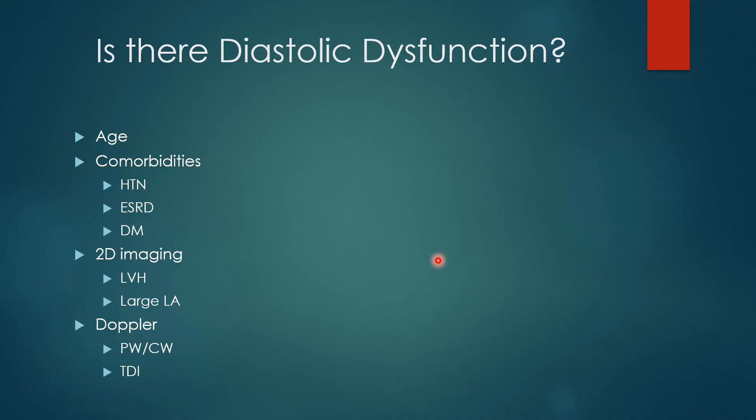Let's go back to the question: is there diastolic dysfunction? When I'm thinking about diagnostics, I try to think in terms of Bayesian reasoning. I'm looking at this patient — before I do anything else, what is my pretest probability that this person has impaired relaxation? I'm assuming I have a clinical question in mind, whether it's shock or hypoxia with pulmonary edema. So I have my pretest probability, I get new evidence, and then I have a post-test probability.